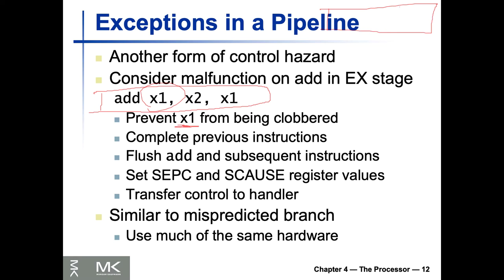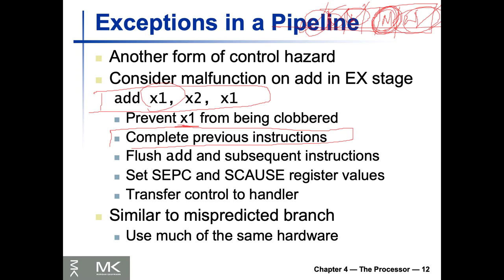If we terminate right away, we have to make sure the other instructions already in the pipeline are completed. This is a very important task for defining the exception handler. After the other instructions complete, we flush the add instruction — remove it from the program counter — and the subsequent instructions are handled either by the handler to restart or to terminate.